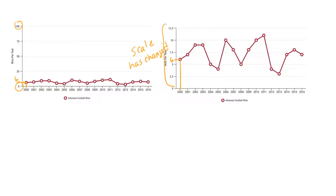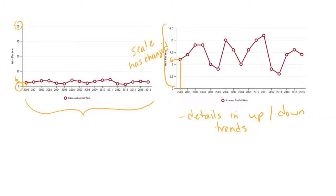Which graph is more appropriate really depends on what you're using it for. If you want to find details in the up-and-down trends - for example, if you're in management and want to know if a change in coaching staff made a difference - the zoomed-in scale is probably the better choice. But if you want to show the team is doing consistently well, perhaps to build a new stadium, arguing that performance has been steady, then the wider scale is better. It depends on the story you want to tell.